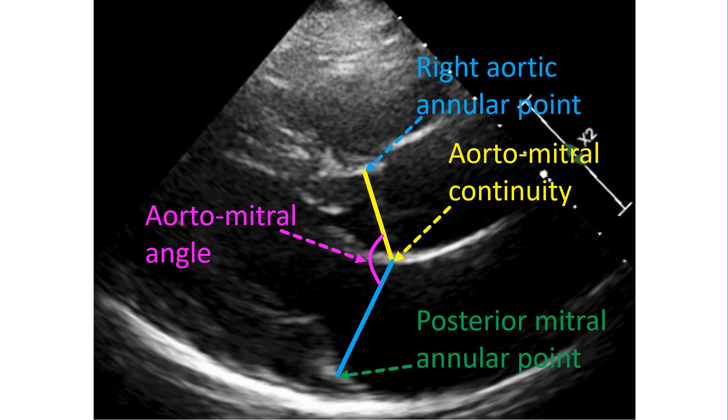Aortomitral angle is the angle between these two planes. It can also be measured in the apical 3-chamber view as well as by 3D echocardiography.